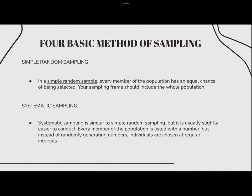Next, we have systematic sampling, which is similar to simple random sampling but is usually slightly easier to conduct. Every member of the population is listed with a number, but instead of randomly generating numbers, individuals are chosen at regular intervals. For example, all employees of the company are listed in alphabetical order. From the first 10 numbers, you randomly select a starting point — number 6. From number 6 onwards, every 10th person on the list is selected: 6, 16, 26, 36, and so on, until you end up with a sample of 100 people.